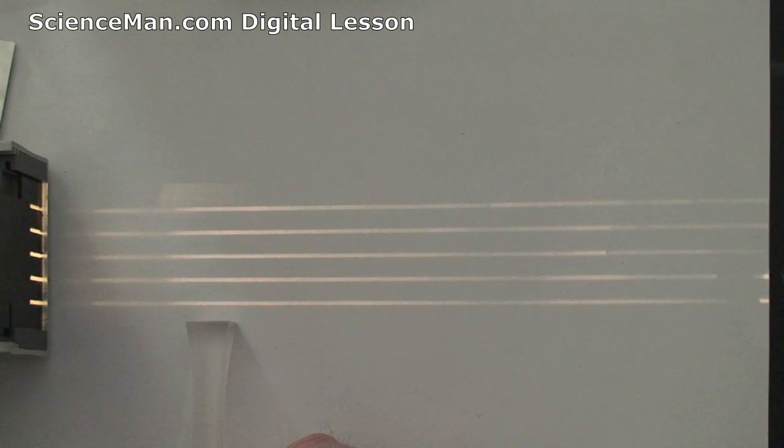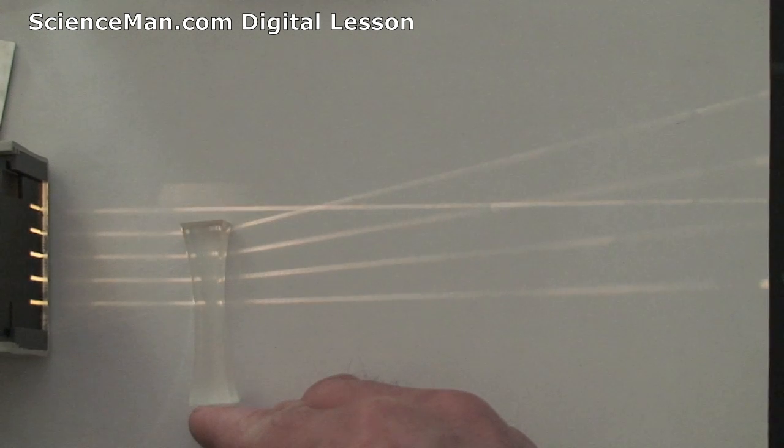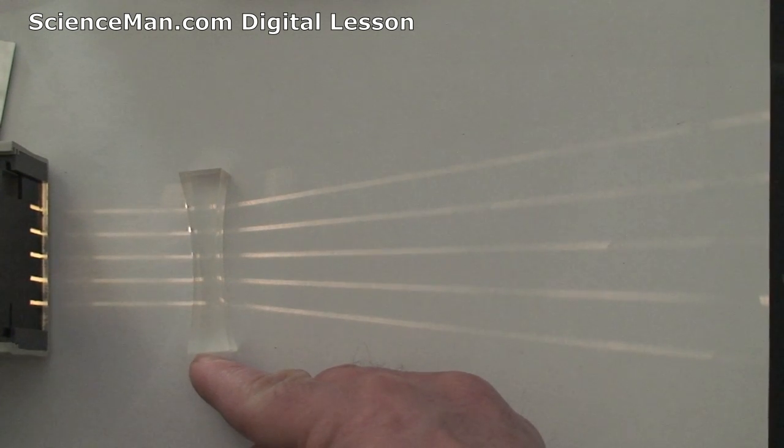This works equally as well with a concave lens. The whole point being is that refraction or the bending of light occurs when a light ray hits a different density medium at an angle.